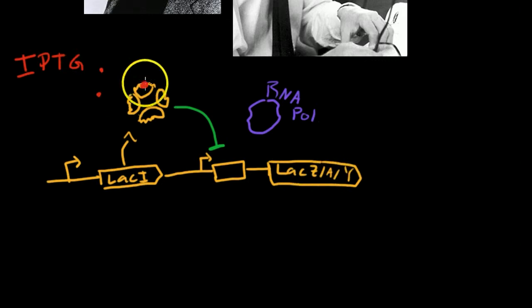So no IPTG means that this big globular protein is in the way, and RNA polymerase can't actually move down the line. And if IPTG is causing lac-I to not bind, then it's able to go down and transcribe the gene sequences that are farther downstream.